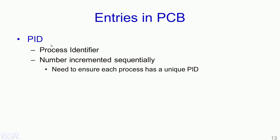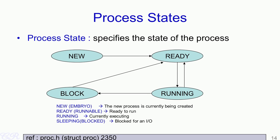An important entry in the PCB corresponding to each process is the PID or process identifier. This is an identifier for the process, essentially defined as an integer, and each process would have a unique PID. Typically the number is incremented sequentially such that when a process is created it gets a unique number. Another very important aspect in the PCB is the state of the process. From the time a process is created to the time it exits, it moves through several states such as new, ready, block, or running.